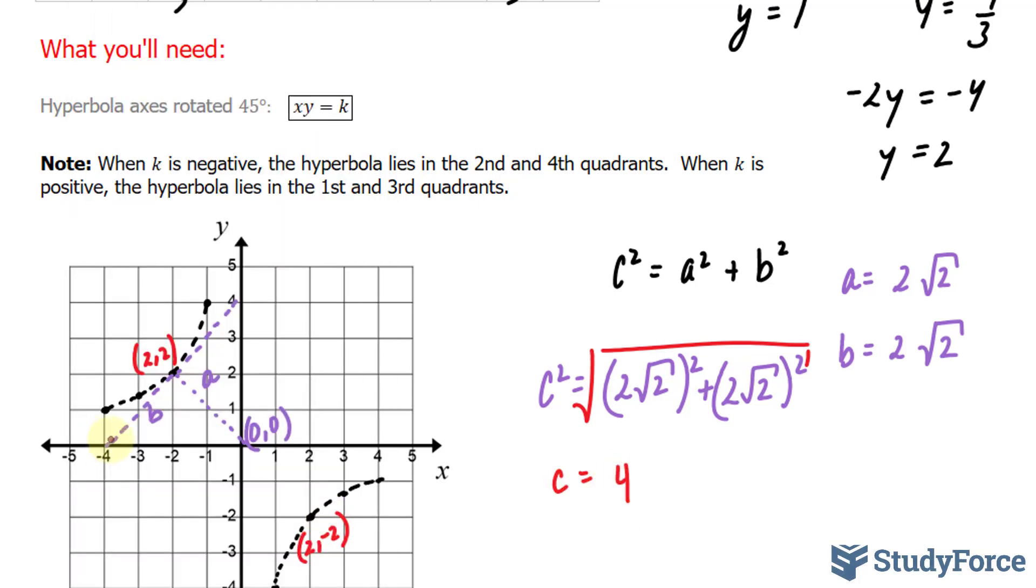Technically, this 4 represents the distance from this point to this point. Because remember, we used the Pythagorean theorem. That's a right triangle. And given the nature of a hyperbola, this represents the distance from the center to the focus. All we have to do now is find the coordinates of that focus.